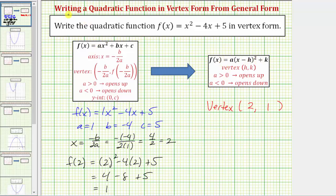So now we have all the information we need. We know a equals one, we know h equals two, and we know k equals one. Again, because the vertex in this form is the ordered pair h comma k,